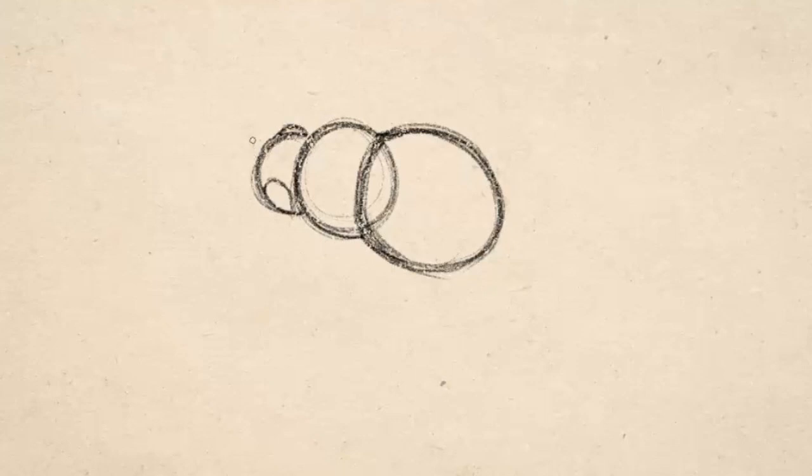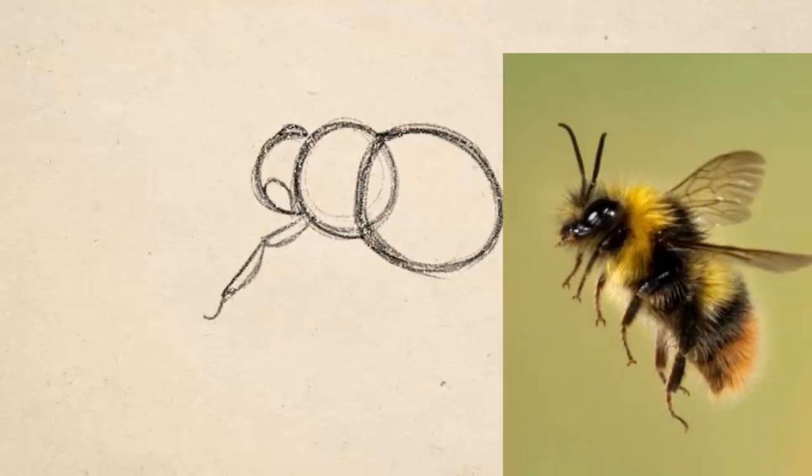You can do this two different ways. You can do it super easy and just create six little lines coming out because he's an insect, so he has six legs. Or if you want to get super detailed, you can look at some reference photos, or if you're brave, look up close at a bumblebee at his actual legs. They're really cool looking.